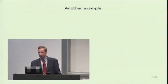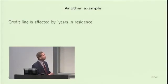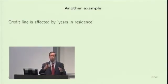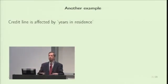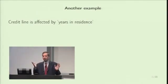We take another example of non-linearity. We take the credit line. Now if you look at the credit line, the credit line is affected by years in residence. We argued that if someone has been in the same residence for a long time, there is stability and trustworthiness, and someone has been in a short time, there is a question mark.